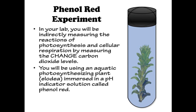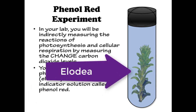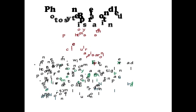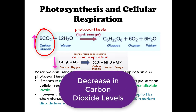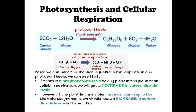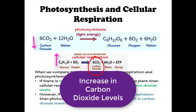The last experiment is the phenol red experiment. You will indirectly measure the reactions of photosynthesis and cellular respiration by measuring the change in carbon dioxide levels. You will use an aquatic photosynthesizing plant called Elodea immersed in a pH indicator called phenol red. If there is more photosynthesis than cellular respiration, we will get a decrease in carbon dioxide levels. However, if the plant undergoes more cellular respiration than photosynthesis, we should see an increase in carbon dioxide levels in the solution.